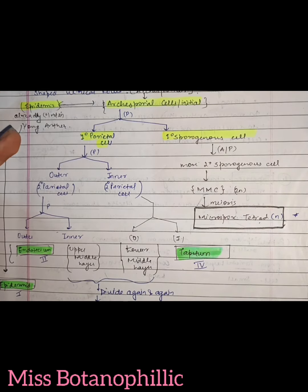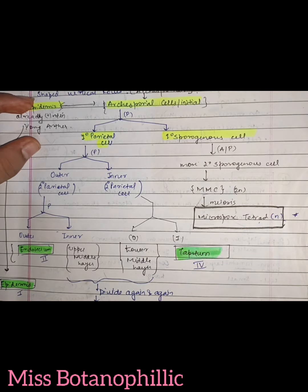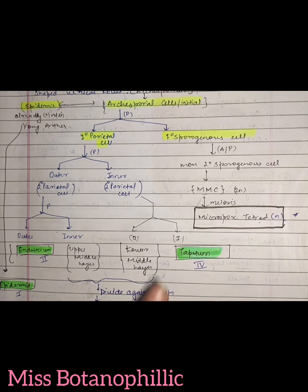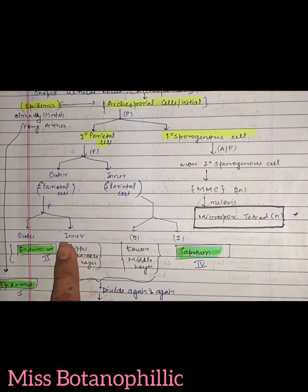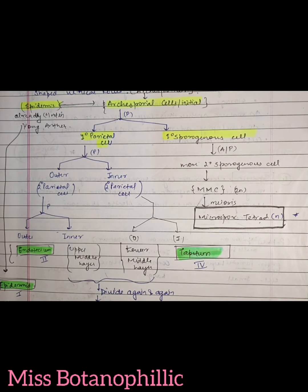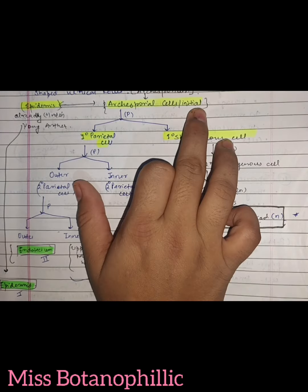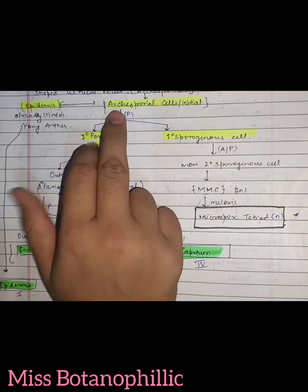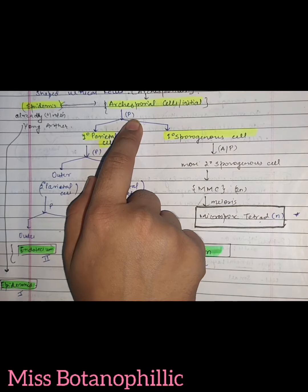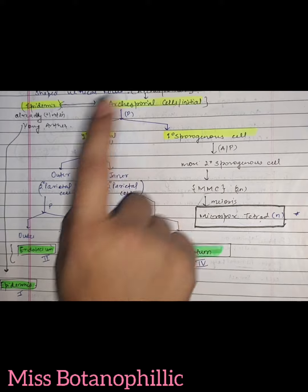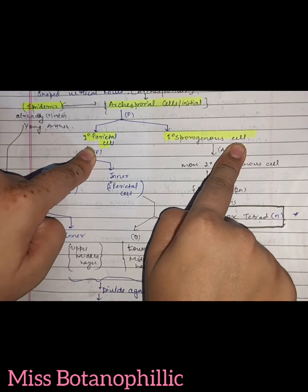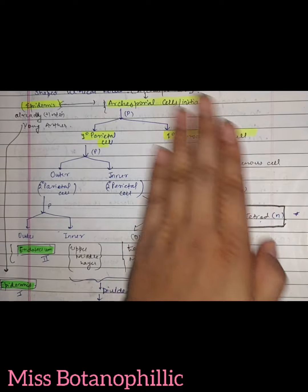So we need to pay attention to the microsporangium, tapetum, endothecium, and epidermis layers. The archesporium cell or initial first undergoes a periclinal division. This periclinal division gives rise to what is called the primary parietal cell on the outer side, and on the other side it is called the primary sporoginous cell.